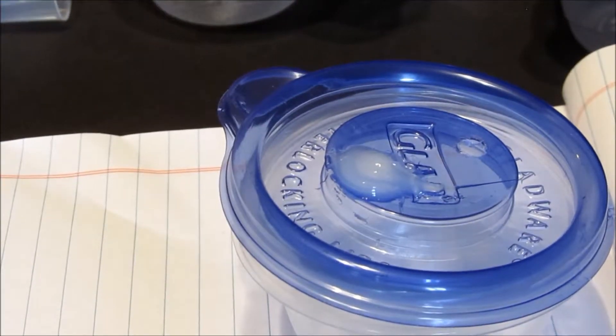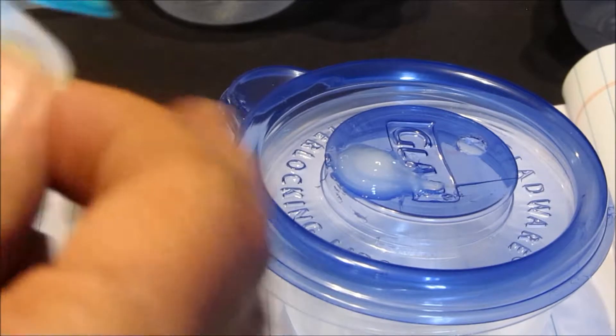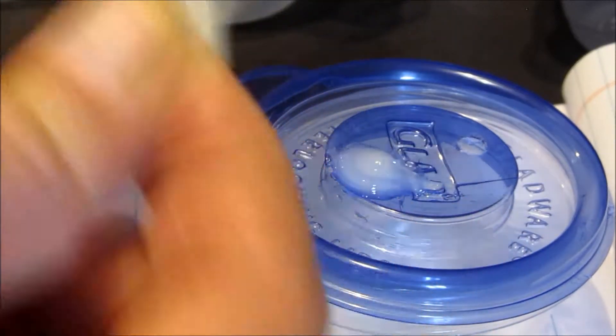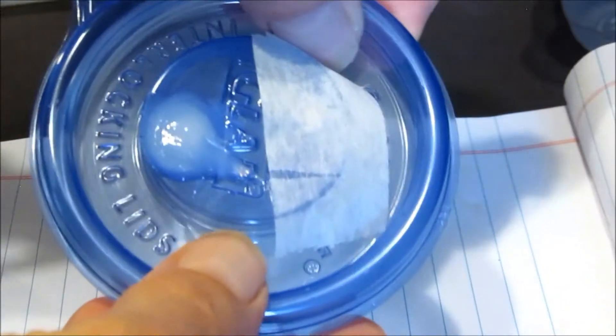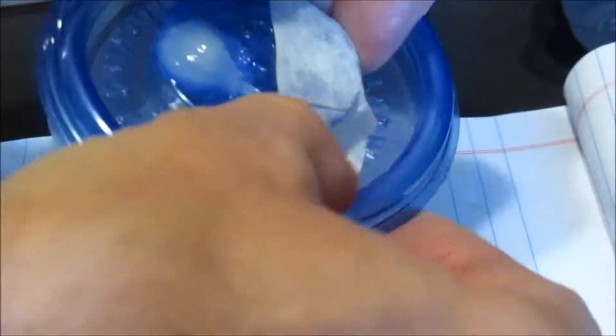Put it on there, and then all we have to do is add a piece or two of the micro-pore tape. Look at that. We're ready to do a car. All right. Okay.